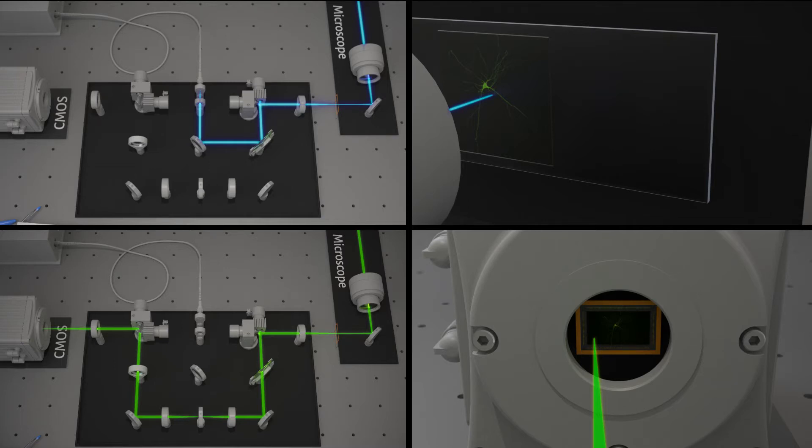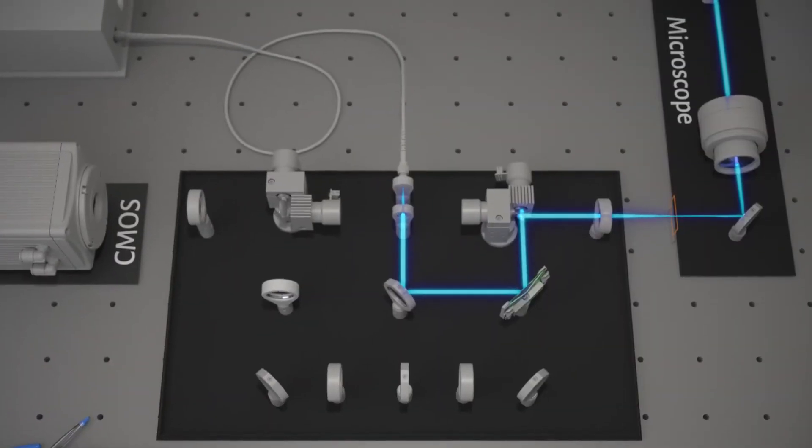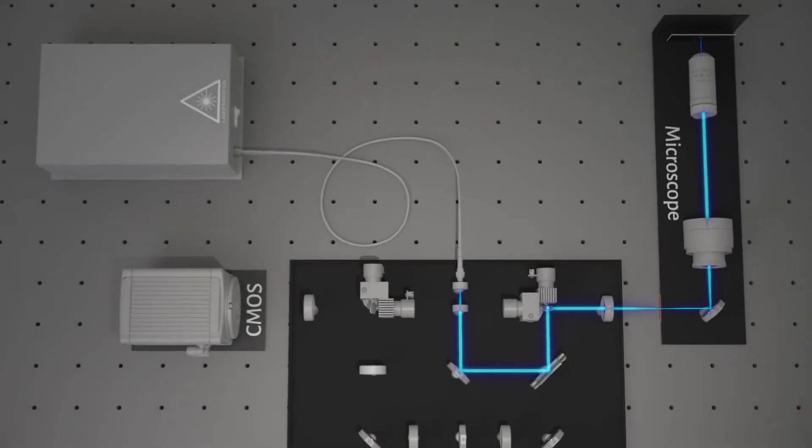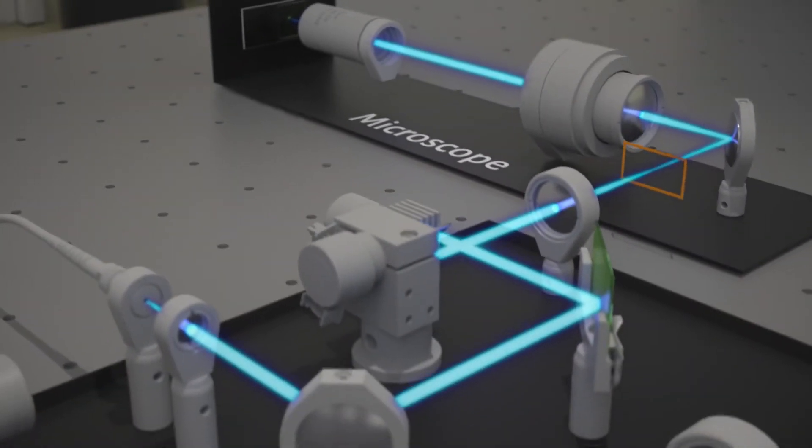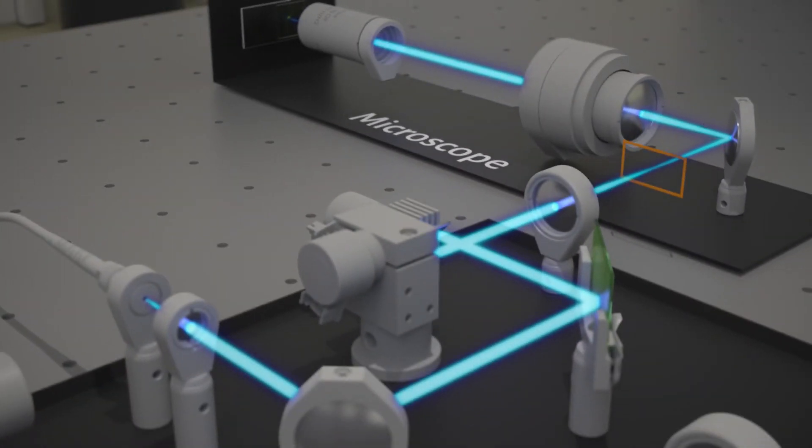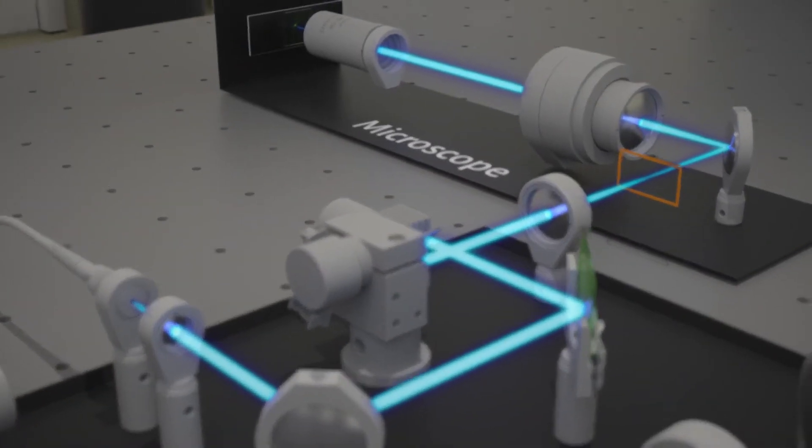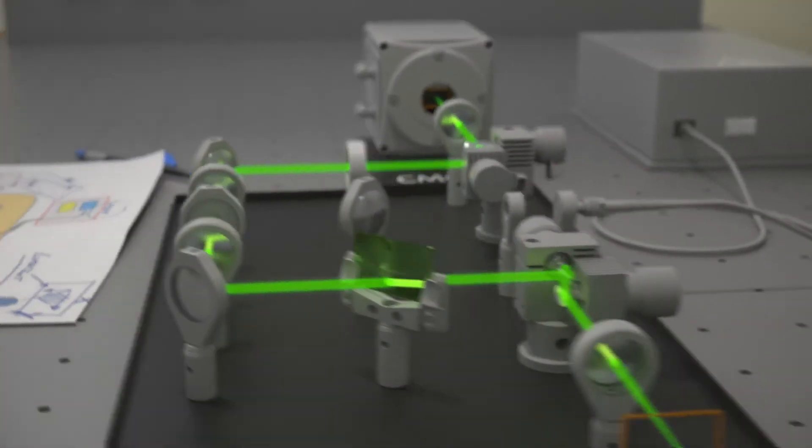Now, let's follow the light path of the RCM confocal microscope. First, we examine the light coming from the laser scanning the object. This is the excitation light. Second, we follow the light emitted by the object. This is the emission light.